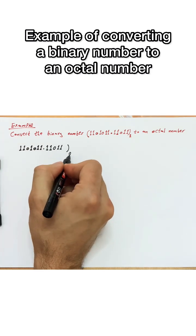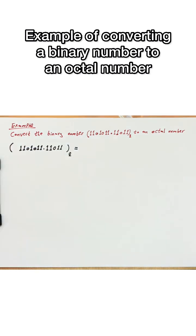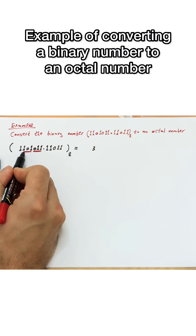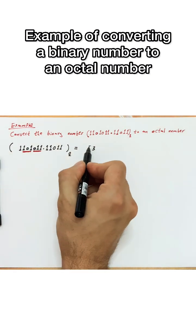We start with the integer part from the left of the decimal point and take these 3 digits. From the table, these digits are equal to 3. Then we take the next 3 digits. From the table, these digits are equal to 5.